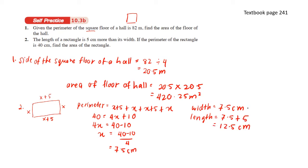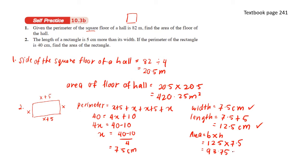Now that we know the width and the length, we can find the area of the rectangle. The area uses the formula base times height. The base is 12.5 and the height is 7.5, so this gives us an answer of 93.75 cm squared.